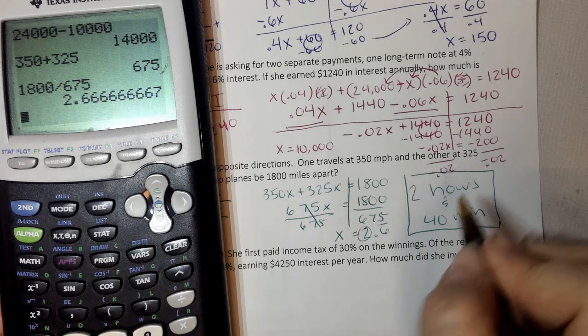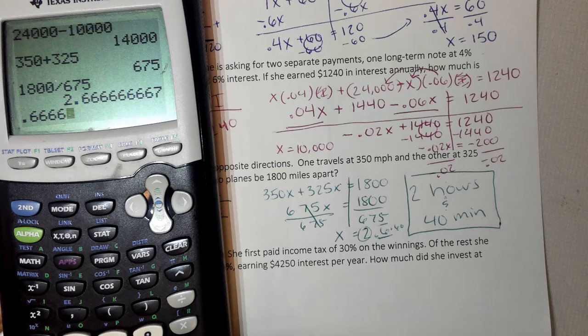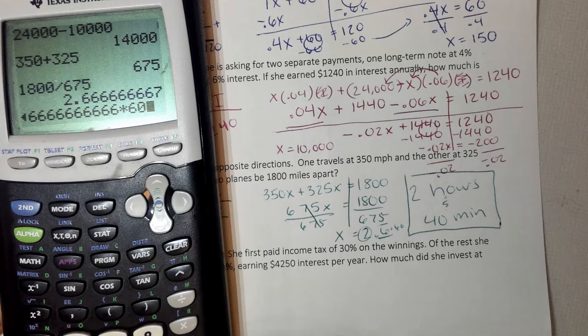And remember, it's because we take our 0.6 times 60. Now 0.6 repeating, if you just do 0.6, it's not going to be the same. 0.6 all the way across the screen times 60 minutes is 40.